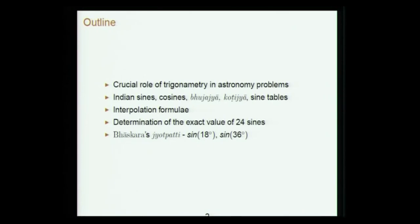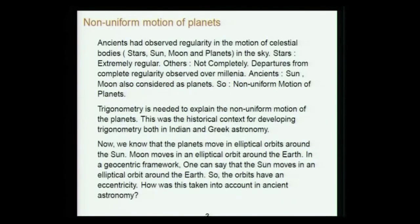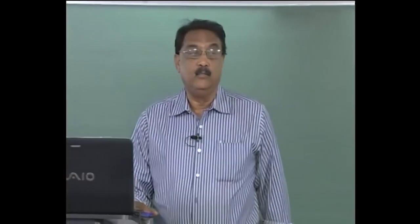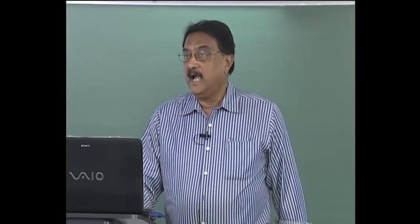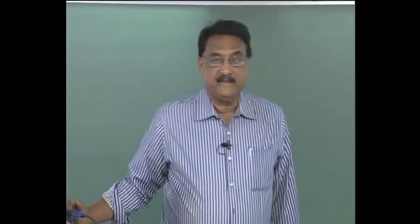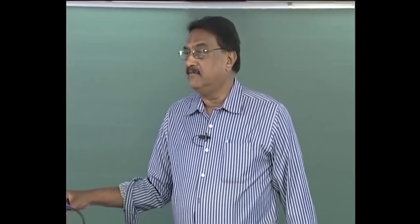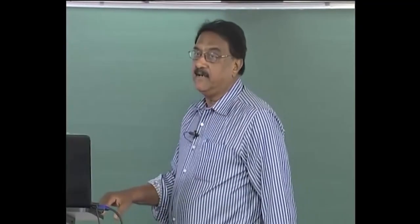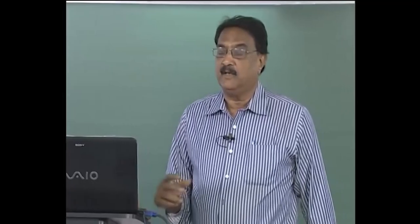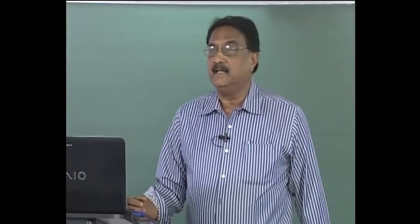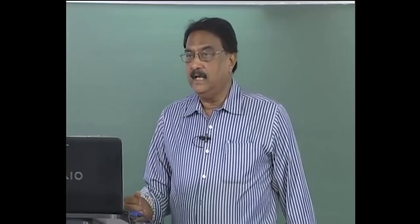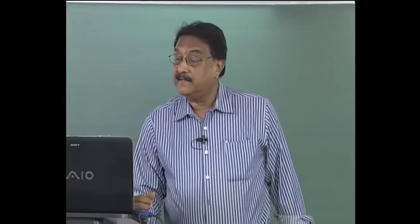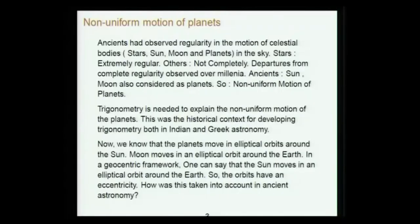There will inevitably be some overlap between this lecture and the previous lecture. The ancients had observed regularity in the motion of celestial bodies — by celestial bodies I mean stars, sun, moon, and planets in the sky. In the very olden days, when things were far more uncertain and life was more difficult, this was one of the most regular things they would have seen: the motion of the sun and moon, and to a lesser extent the planets. The stars themselves have an extremely regular motion.